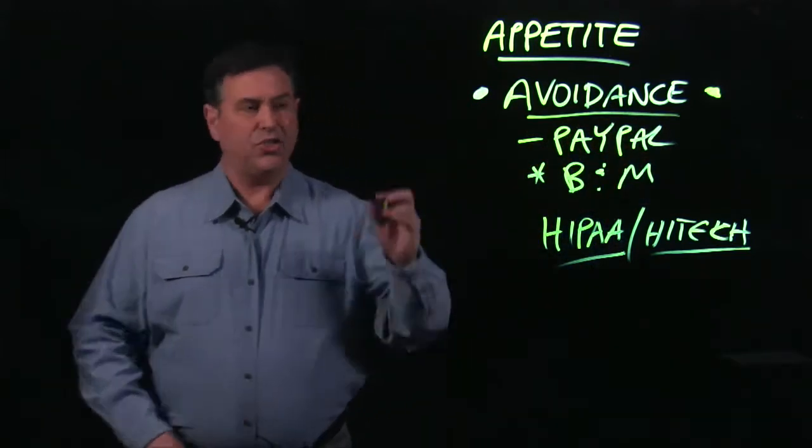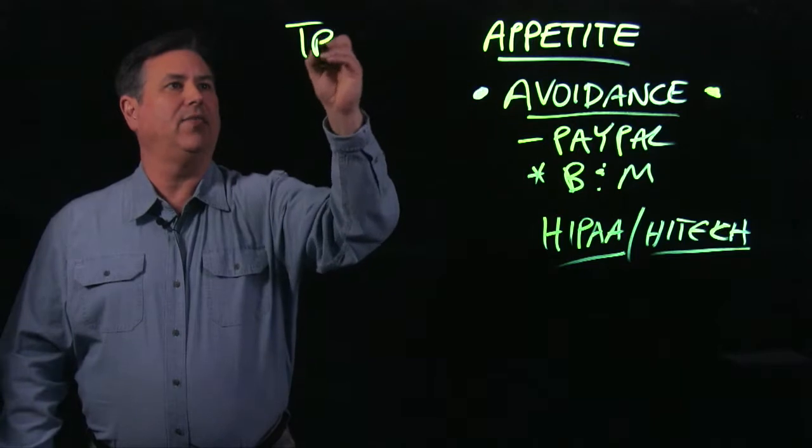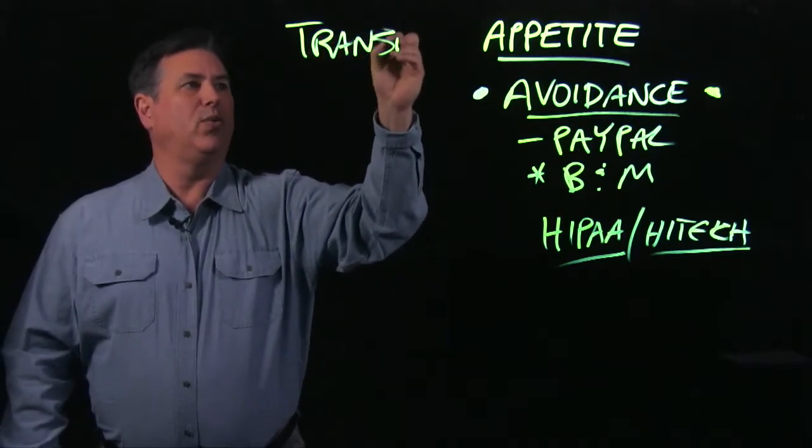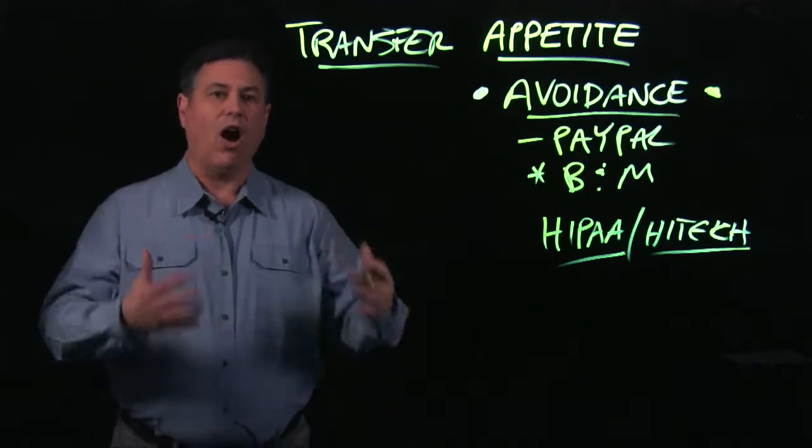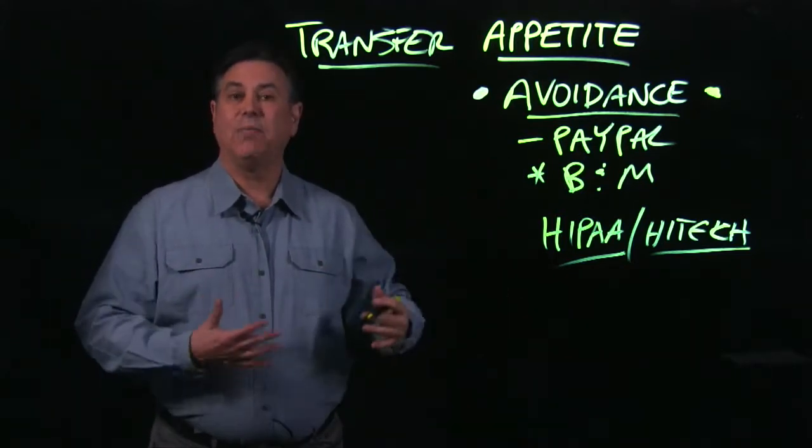Another method is to transfer the risk. Transferring risk means you're just going to offload whatever residual risk you have. You're going to offload that risk onto some other entity.